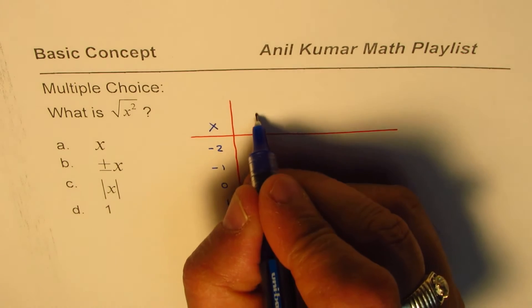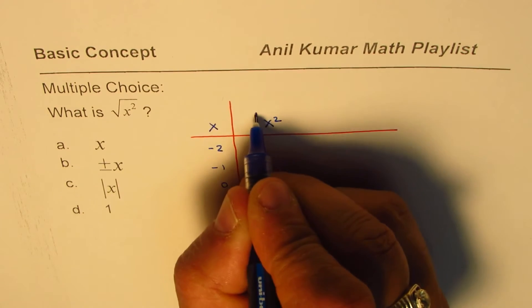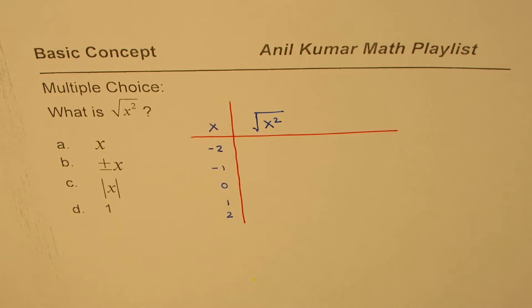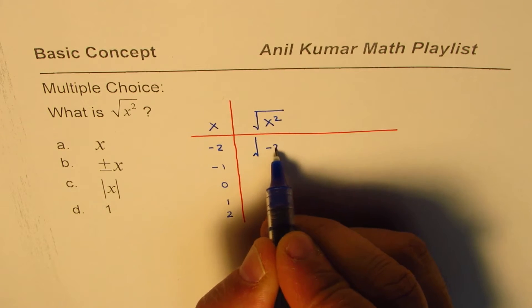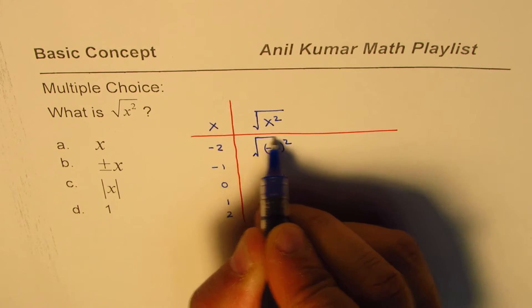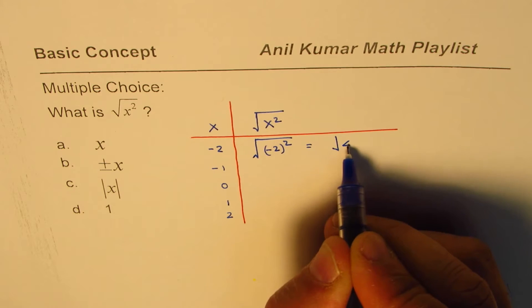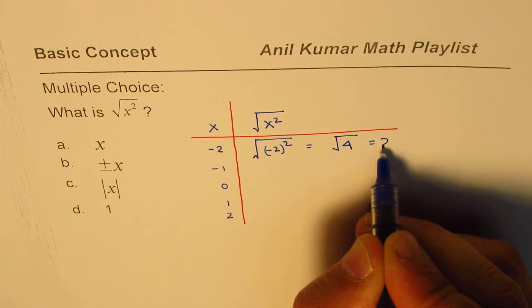Then, what is square root of x squared? We'll just calculate these values. So if I write square root, we have minus 2 whole squared. We can write this as square root of 4, which is equal to 2.